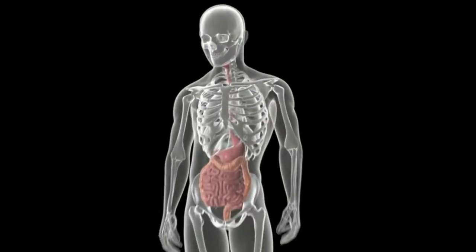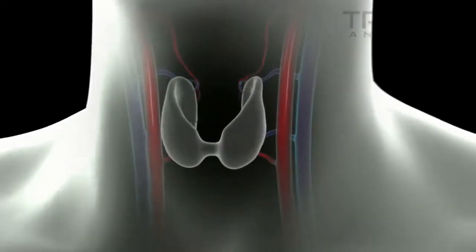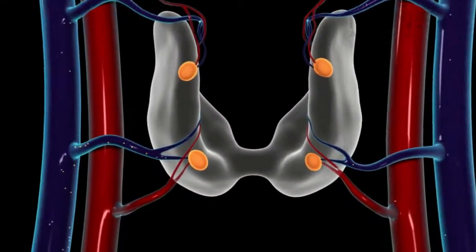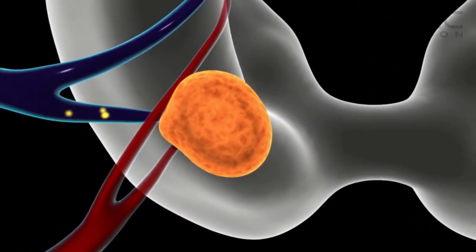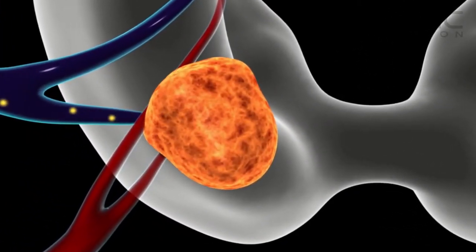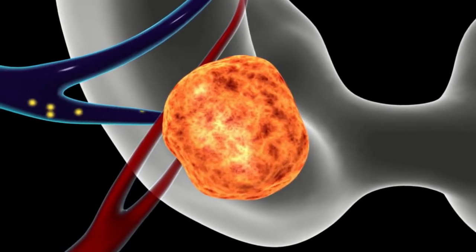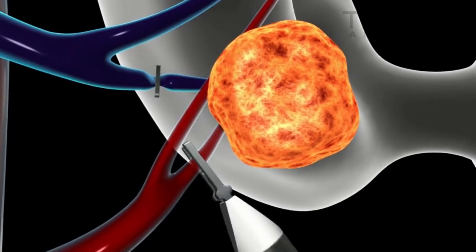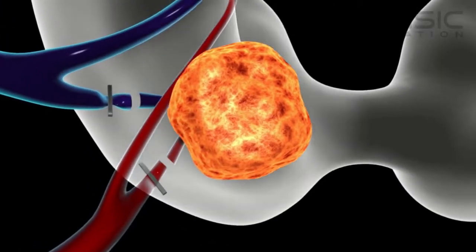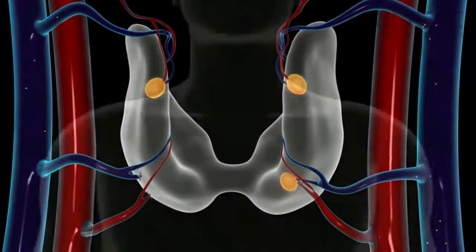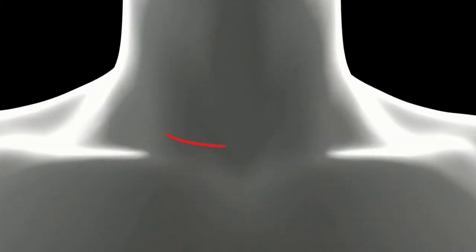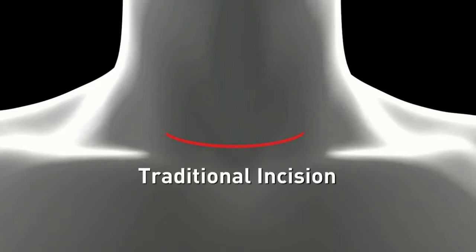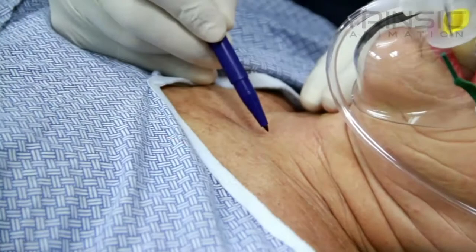This procedure is called a minimally invasive parathyroidectomy. The surgery removes the abnormal parathyroid gland or glands. Innovative techniques allow for minimal scarring, focusing only on the abnormal glands without disrupting surrounding tissue or the remaining normal glands. Traditional surgical approaches involved a large incision and exploration of both sides of the neck.